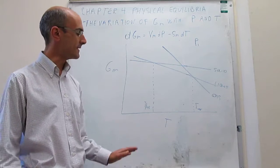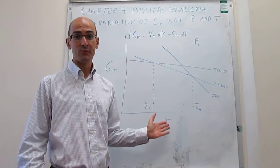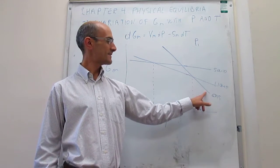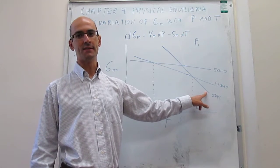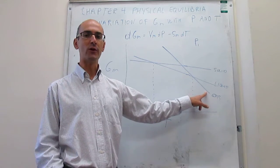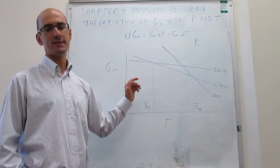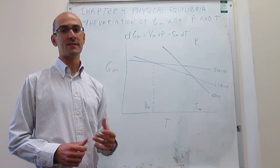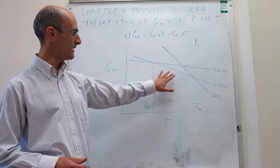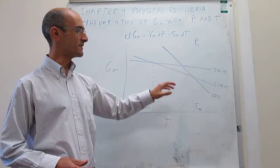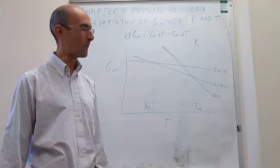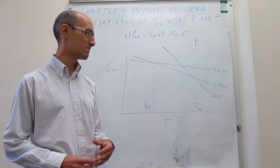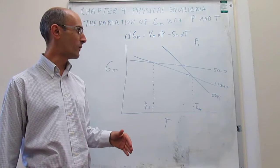What we have learned is that, much as we knew, at high temperatures the gas is the stable phase because that is the phase with the lowest molar Gibbs energy; at low temperatures the solid is the stable phase; and at intermediate temperatures you have the liquid phase stable. This is a substance that would not undergo sublimation, like water at one bar.